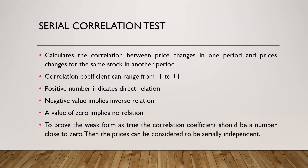What are the different tests under weak form efficiency? The first test is the serial correlation test. Under the serial correlation test, the correlation coefficient is calculated. The price changes of one period form one set, and the price changes of the same stock in another period are also considered. Then we see whether there is any correlation between these two price changes — we take one stock and study the price changes in one period versus another period of the same stock.